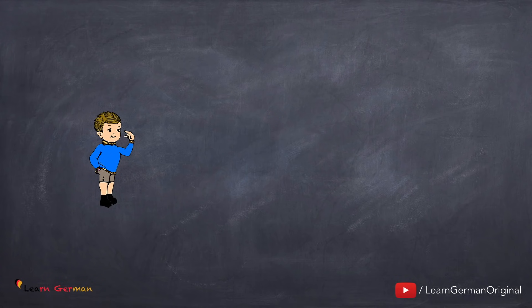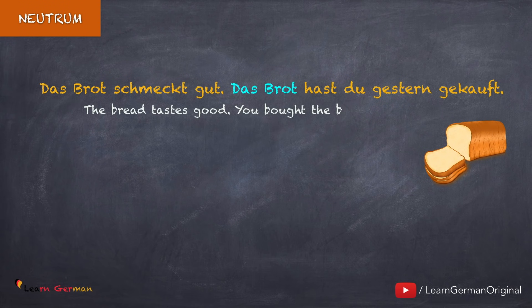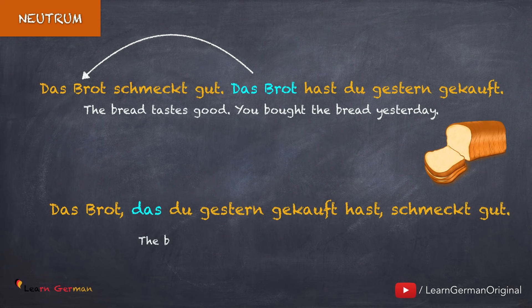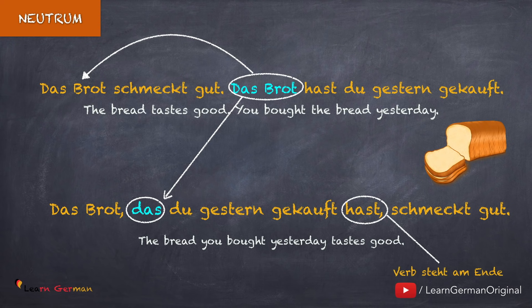Jetzt schauen wir uns Beispiele für Neutrum an. Hier ist das erste Beispiel: Das Kind, das ich nett finde, heißt Tobias. Hier ist das nächste Beispiel: Das Brot schmeckt gut — das Brot hast du gestern gekauft. In diesem Satz ist du das Nominativsubjekt und das Brot ist das Akkusativobjekt. Der Relativsatz lautet: Das Brot, das du gestern gekauft hast, schmeckt gut. Das Relativpronomen das ersetzt das Brot, und das Verb steht am Ende.